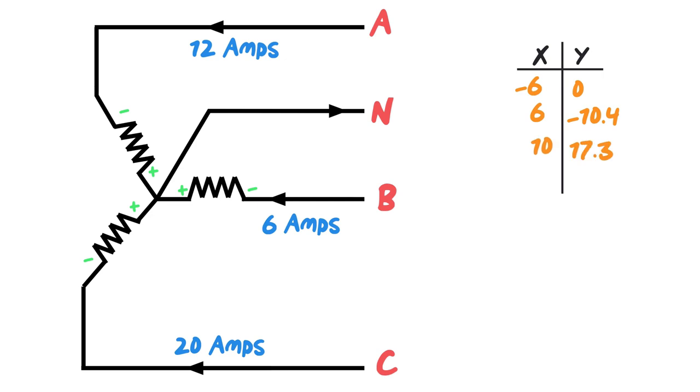And last but not least the 20 amps. Again it's a negative because I'm hitting that negative first. So negative 20 times the cos of 240 degrees gives me 10 and negative 20 times the sine of 240 degrees gives me 17.3. So now what I can do is I can add all these up. I got negative 6 plus 6 is 0 plus 10 equals 10. And 0 plus negative 10.4 gives me negative 10.4 plus 17.3 gives me 6.9. This is my rectangular vector and I've got to figure out break it into polar form.